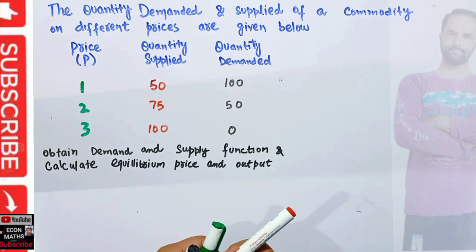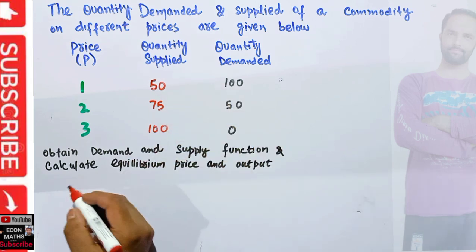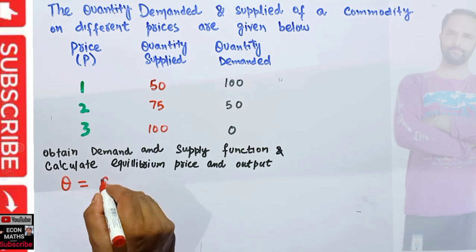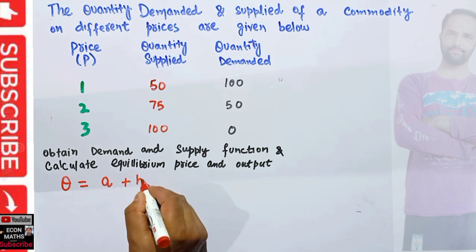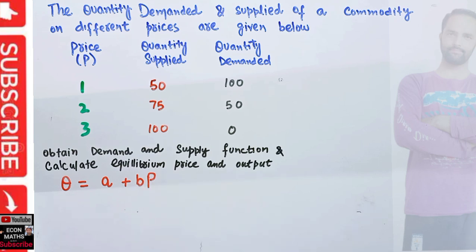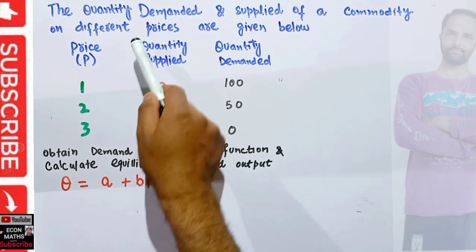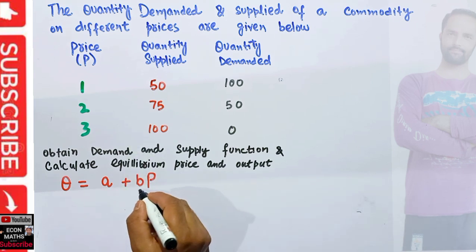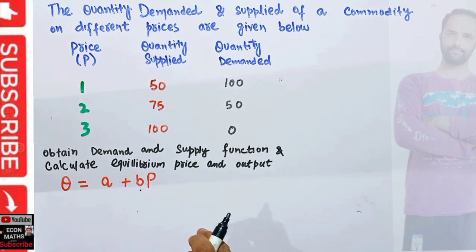We will first derive the demand function. The general form of the demand function looks like this: Q is equal to A plus BP, where B is negative. This is our general demand function. We need to find the values of A and B. First, we need to find B, which denotes the slope — or what we call the inverse of slope in economics.